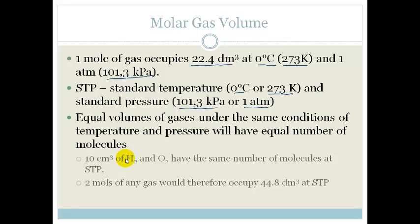Two moles of any gas would therefore occupy 44.8 decimeters cubed at STP. So if one mole of gas occupies 22.4, then obviously two moles of any gas will occupy 44.8 decimeters cubed at STP.